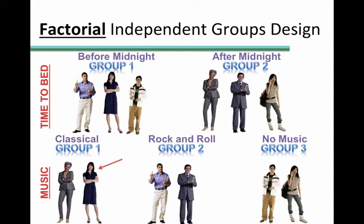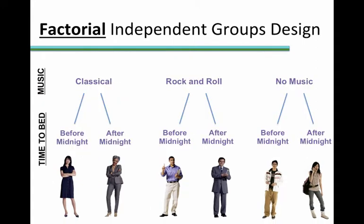Since the participants are experiencing one condition of each variable at the same time, it may be easier to view the breakdown of conditions like so. Now we can see the combination of conditions from each independent variable that each participant gets to experience. Keep in mind that ideally we would have many participants experiencing each possible combination of conditions, not just one participant for each condition. For example, we would want a whole group of participants experiencing rock and roll while going to bed before midnight, not just one as shown here.